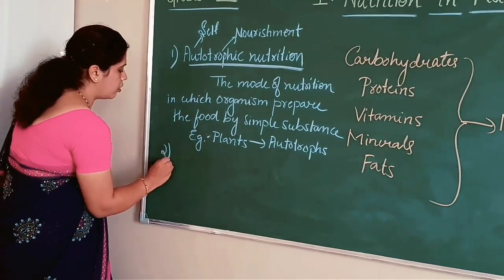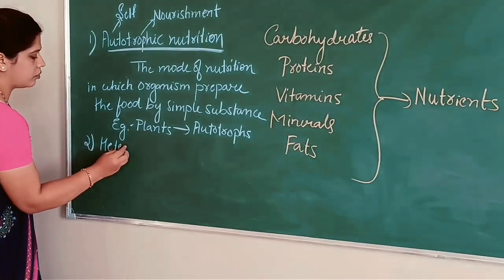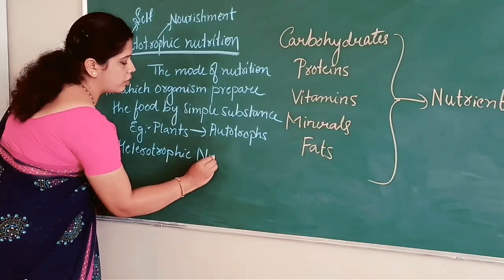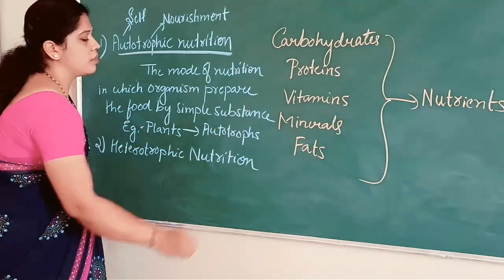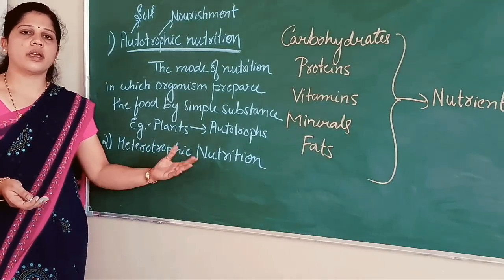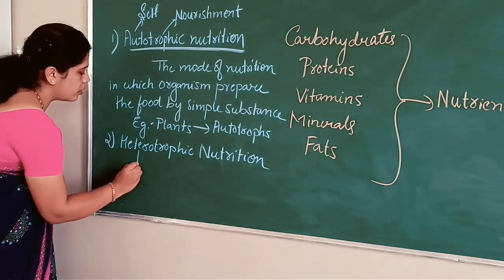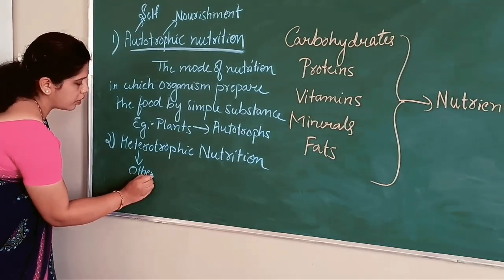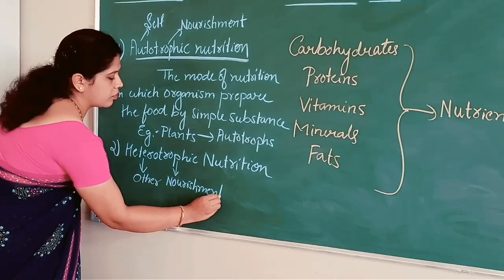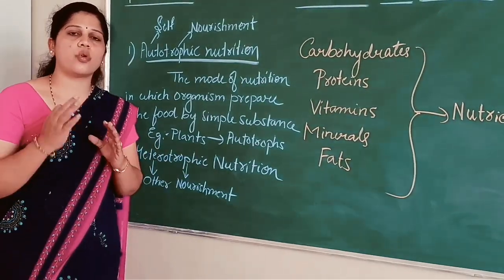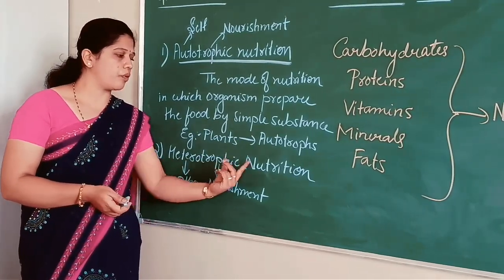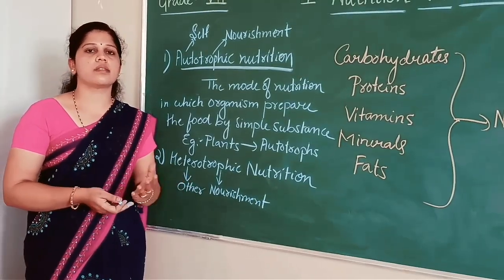The next one is heterotrophic nutrition. In heterotrophic nutrition, organisms cannot prepare their own food, so they depend upon plants or the animals that feed on plants. Here 'hetero' means other and 'trophic' means nourishment. Heterotrophic nutrition is the mode of nutrition in which organisms depend upon others for their food. Examples are human beings and animals.